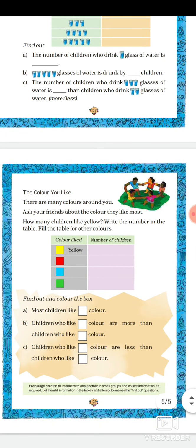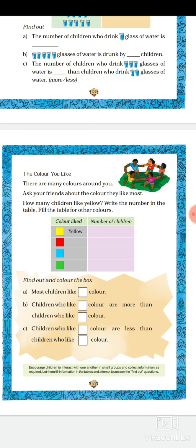The color you like. There are many colors around you. Ask your friends about the color they like most. How many children like yellow? Write the number in the table. Fill the table for other colors like red, blue, or green. The most children like dash color — you can ask and find out. Write your favorite color too. Children who like dash color are more than dash color, and children who like dash color are less than children who like dash color.